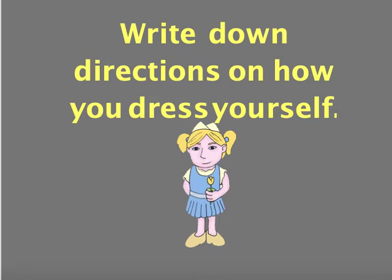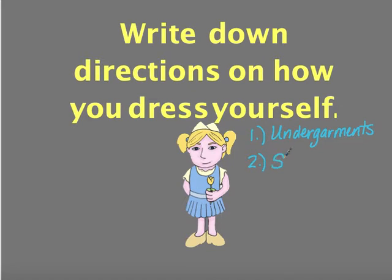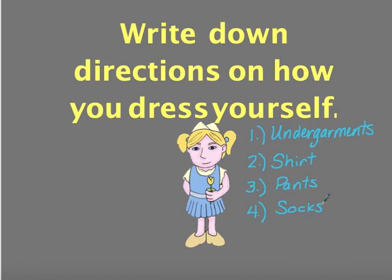If I asked you to write down the directions on how you would dress yourself, first we would all start with putting on our undergarments, because that's our bottom layer — it obviously has to go on first. After that, we get some options: some of us will put on our shirts then pants, while others might put on their pants then their shirts. After shirts and pants, we typically put on our socks — though that might be optional — and then we conclude our outfit with shoes.